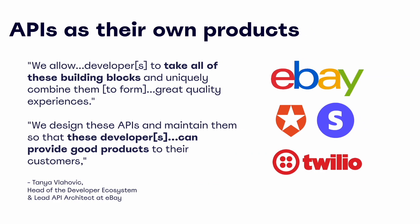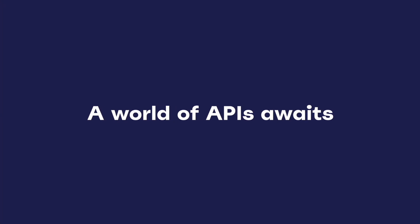REST APIs are very versatile. They can serve as a connection within complex software, or they can stand alone as their own product even. There are many successful companies who have taken an API-first approach, where their open APIs are the primary value driver behind their business model. Some successful examples can be seen in companies like eBay, Twilio, and Stripe. The head of developer ecosystem at eBay puts it really well: 'We will allow developers to take all of these building blocks and combine them to create great experiences.' It's great evidence that being an engineer with the ability to leverage REST APIs opens up so many doors for you.